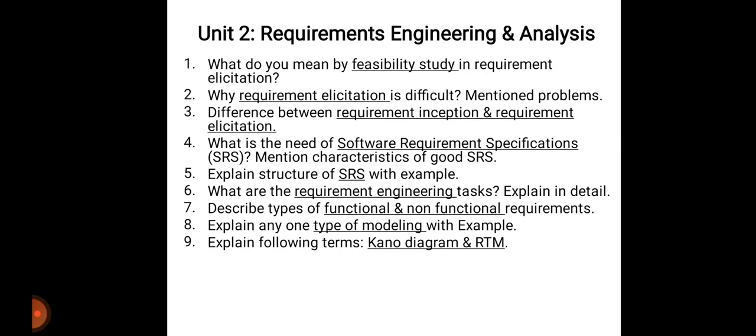Next, explain any one type of modeling with example — list the types of modeling then explain one with example. Last, explain the following terms: Kano diagram and RTM — explain those terms with example. From this unit, requirement elicitation, SRS, and functional and non-functional requirements are the three most important points.